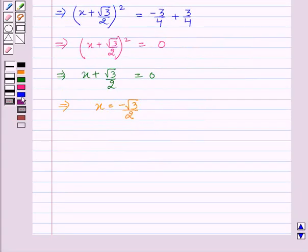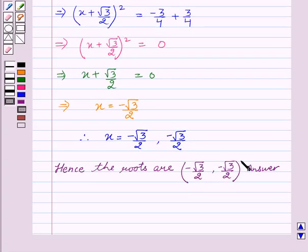Therefore, x equal to minus square root of 3 by 2, minus square root of 3 by 2. Hence, the roots are minus root 3 by 2 and minus root 3 by 2, which is the required answer.